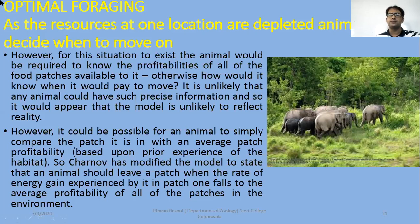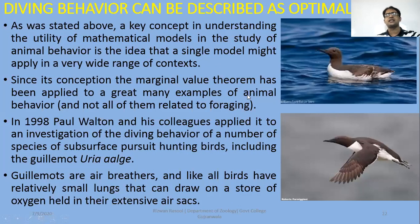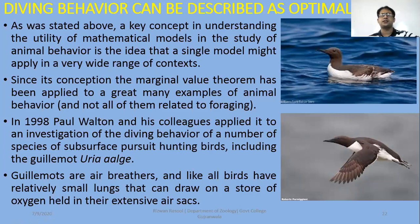It could be possible for an animal to compare a patch with an average patch profitability based upon prior experience of the habitat. So the scientist modified the model to state that an animal should leave a patch when the rate of energy gain experienced in patch 1 falls to the average profitability of all patches in the environment. One appealing property of such chemical models in the study of animal behaviour is the idea that a single model might apply across a wide range of animals and contexts.